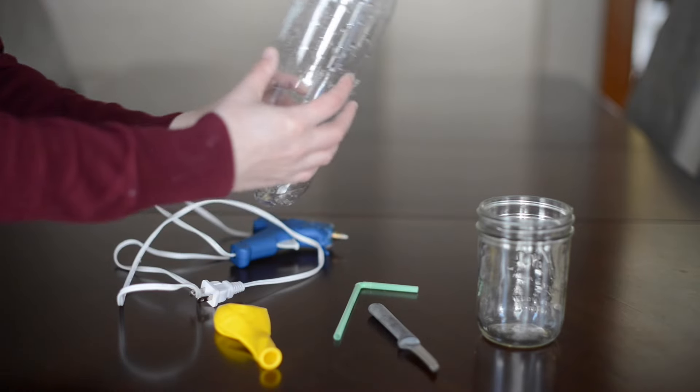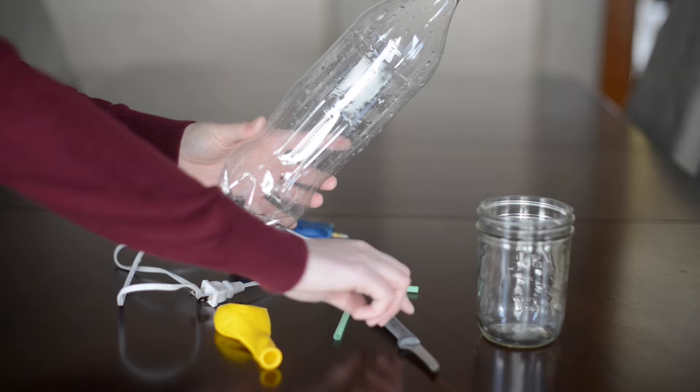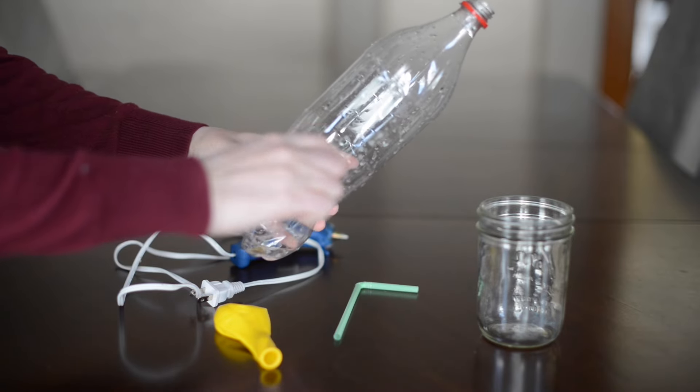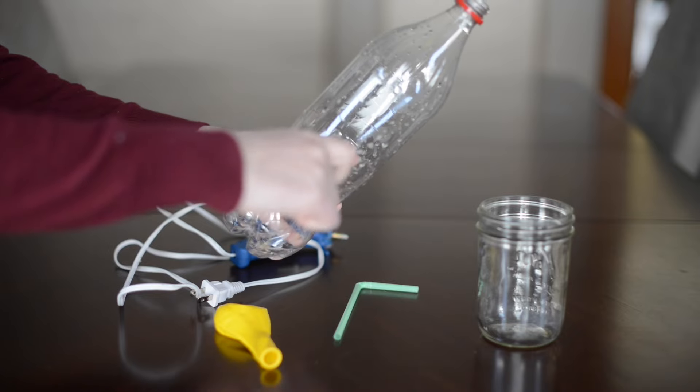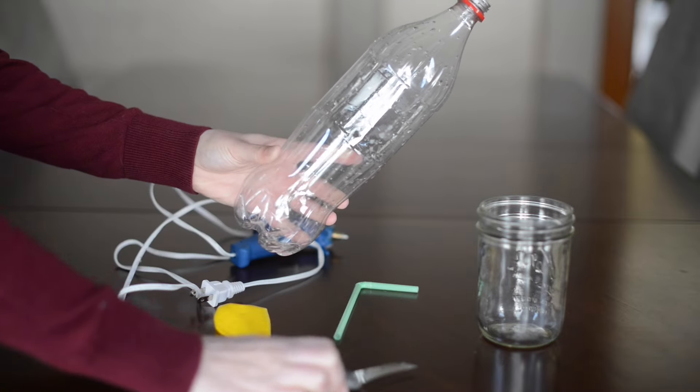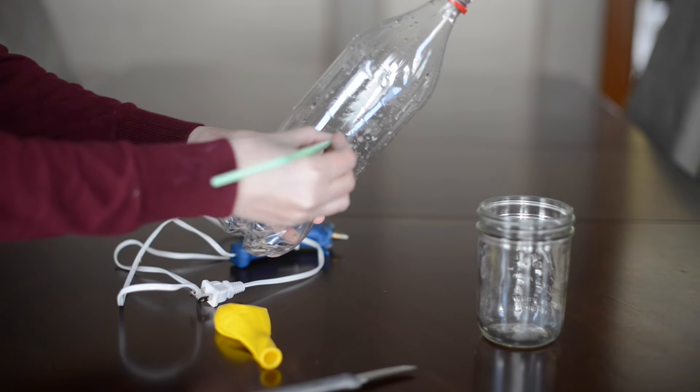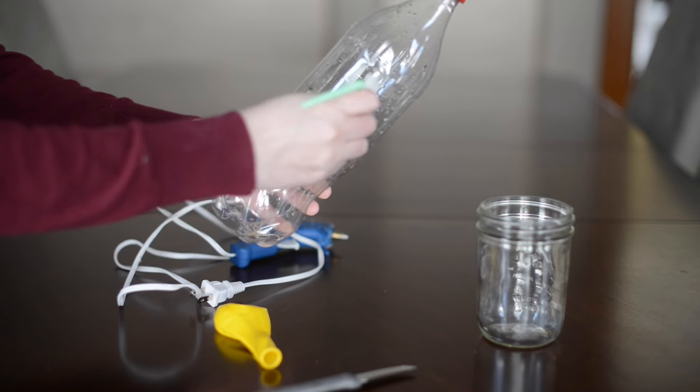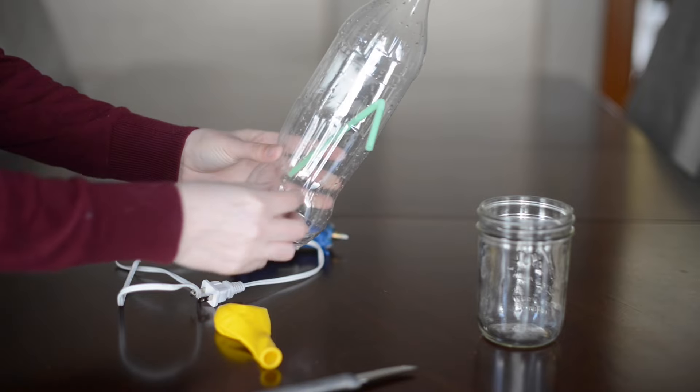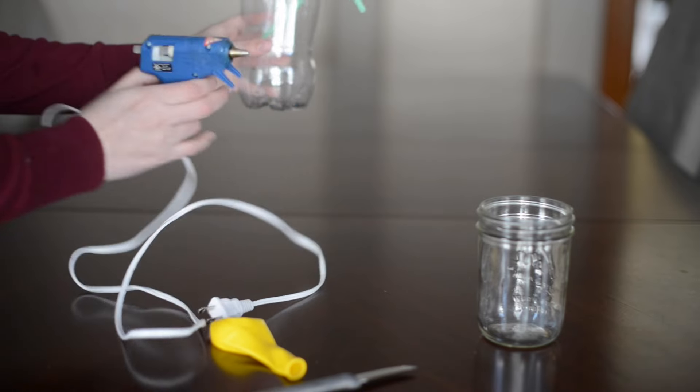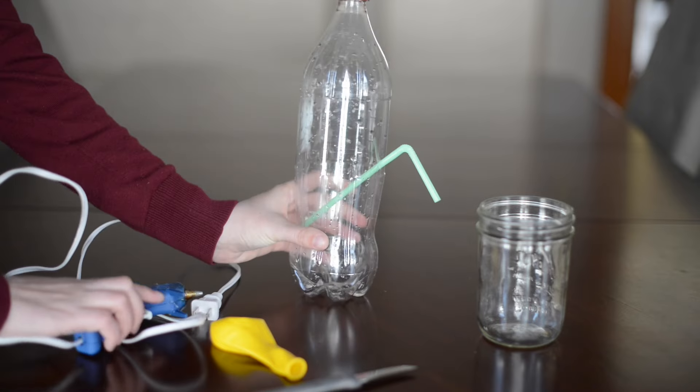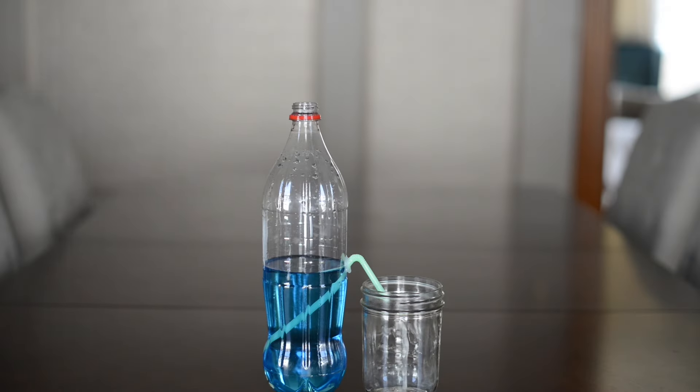So how you want to start is you want to put a little hole in the side of your bottle. I used a paring knife and just kind of twisted it around. And that's a perfect size for the straw. You want it just big enough for the straw. And then you're going to take hot glue and seal around to make sure that there's no air leaking out.